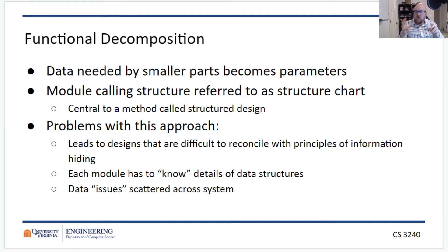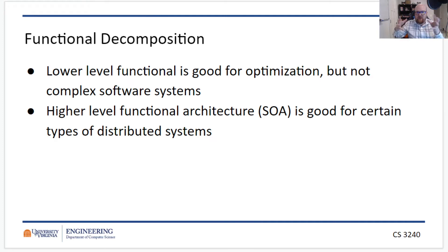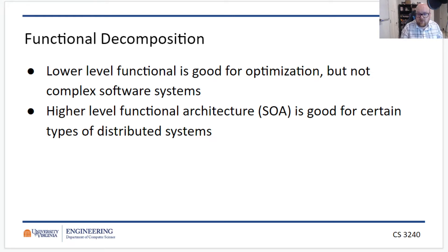Back to functional decomposition: the data issues are scattered throughout the system rather than being in a data layer, because a layered architecture really requires object-oriented design rather than functional. That said, when your system is simple enough to allow it, a functional design has a good structure for optimization — you can focus on optimizing each function without worrying about the heavy concept of state, where objects maintain state over time. A higher-level functional architecture like service-oriented architecture is also very good for certain types of distributed systems.